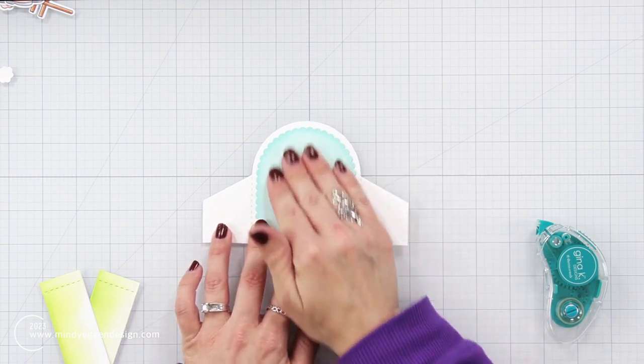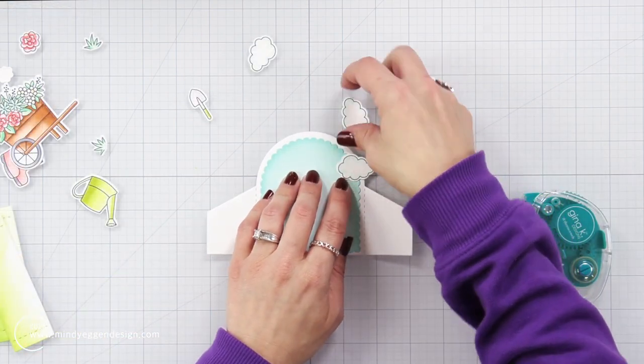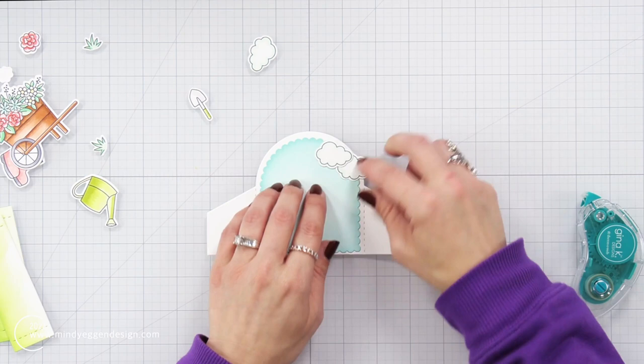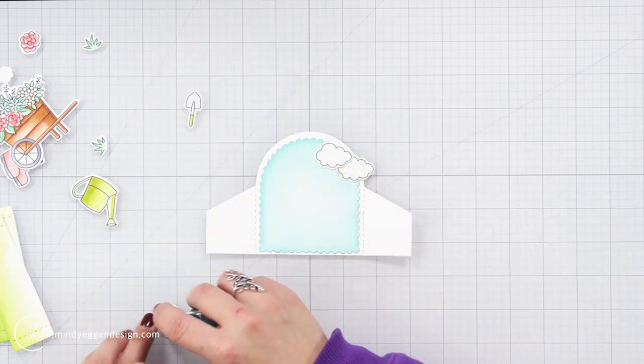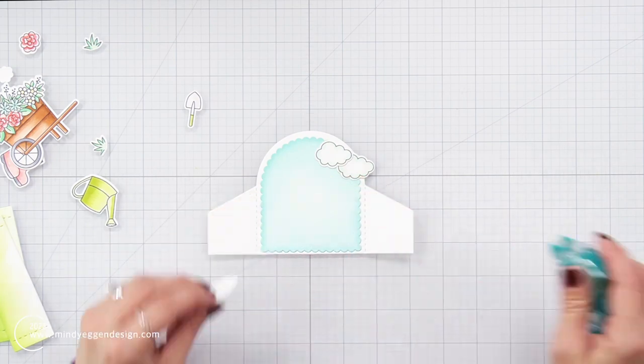There were a few clouds that I had stamped and colored in and I'm going to attach those right away because I knew they were going to hang off the edge of my card and I want to be able to trim this out fairly easy. So once again, just using a tape runner, you could use a liquid glue or whatever adhesive you prefer.